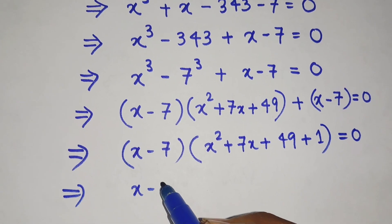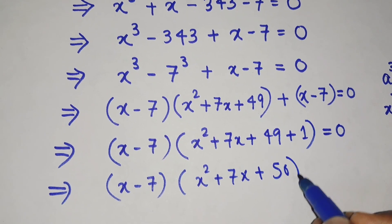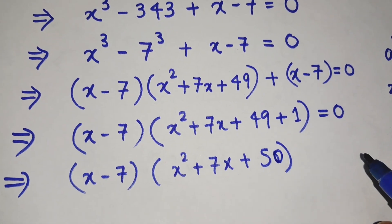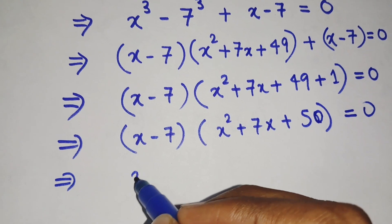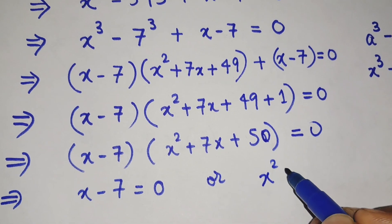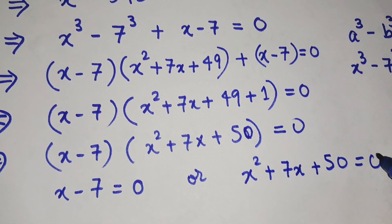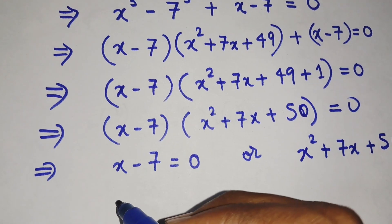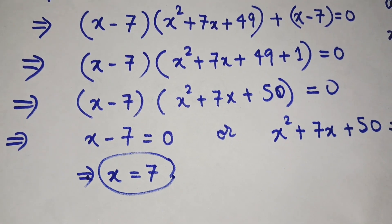So we get x minus 7 into x squared plus 7x plus 50 — because 49 plus 1 equals 50 — equals to 0. It can clearly be observed that either x minus 7 equals 0, or the second factor x squared plus 7x plus 50 equals to 0. From the first equation, x minus 7 equals 0, we get x equals 7. So x equals 7 is clearly one solution of the cubic equation.